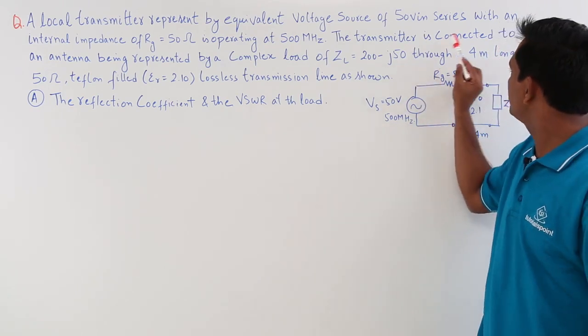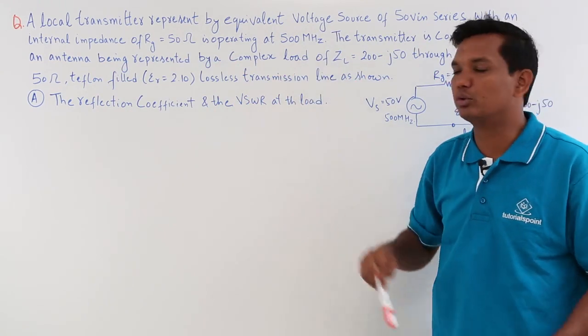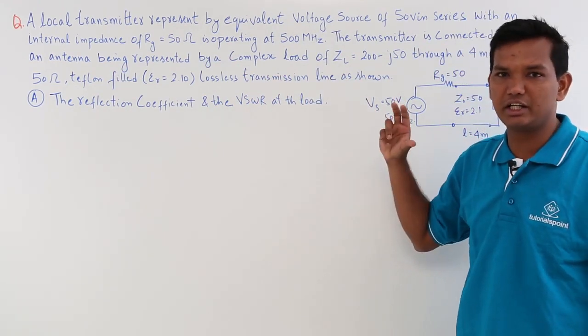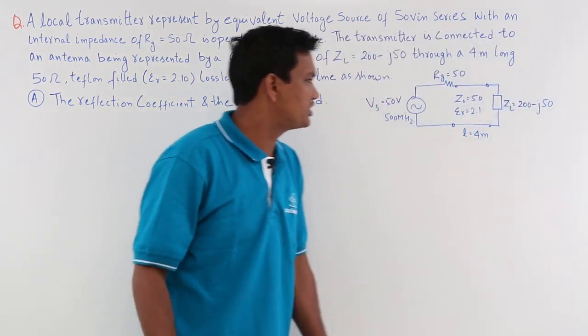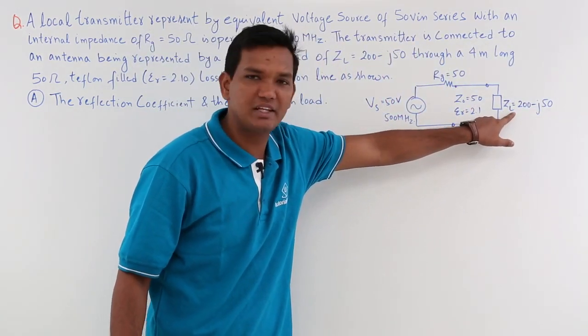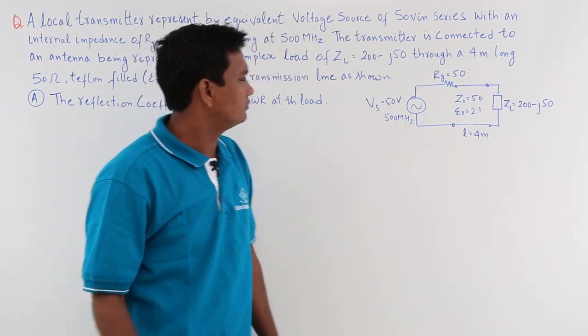The transmitter is connected to an antenna being represented by a complex load. So this source, or the generator, is connected to an antenna which they have represented here. That complex impedance ZL is 200 minus 50j.